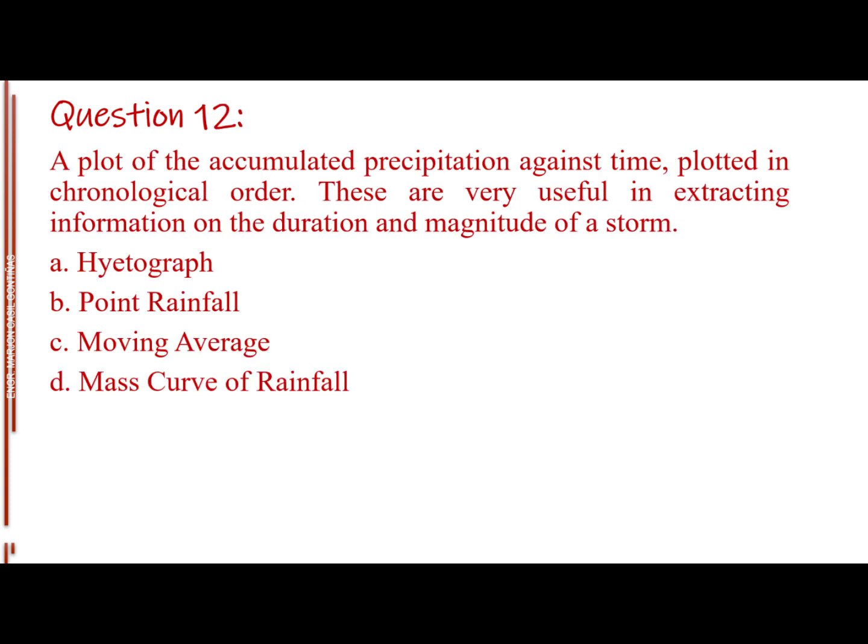Question number 12. A plot of the accumulated precipitation against time, plotted in chronological order. These are very useful in extracting information on the duration and magnitude of a storm. Letter A, Hyetograph. Letter B, Point Rainfall. Letter C, Moving Average. Letter D, Mass Curve of Rainfall. The answer is Letter D, Mass Curve of Rainfall.